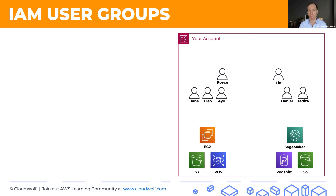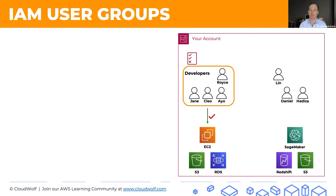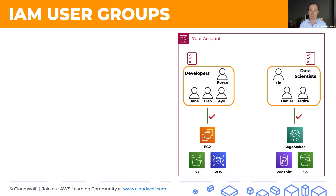So what can we do? Well, instead of giving each user individual permissions to access the tools that they need, we can group the users into groups. The developers can go into a group which we'll name 'developers,' and then we assign permissions to that whole group. The users inside this group will inherit these permissions. Then we'll put the data scientists into a group called 'data scientists' and similarly assign permissions for the tools they need.